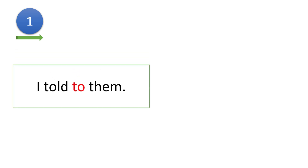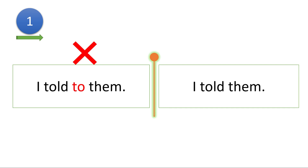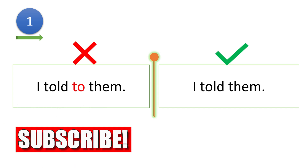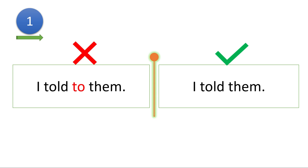We'll begin with the first mistake that English learners make. 'I told to them' — this is absolutely wrong. The correct way is 'I told them' because the word 'tell' does not take 'to' after it immediately. 'Tell' takes an object: tell me, tell her, tell them, tell you. So 'I told them' is the correct way. But you can say 'say to them' or 'say to her' or 'say to me.' When we have a direct object, we prefer to use 'tell.'